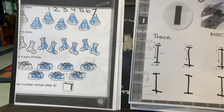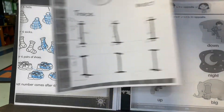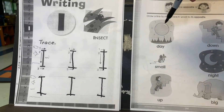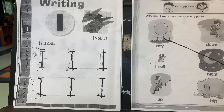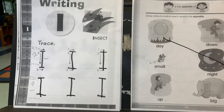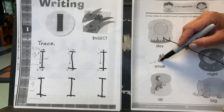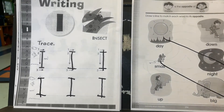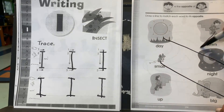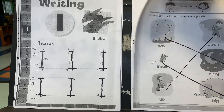Here we have opposites. What's the opposite of day? That's right - night. What's the opposite of small? Big - good job. And the opposite of up the stairs is going down the stairs.